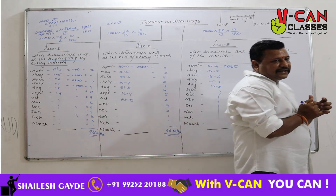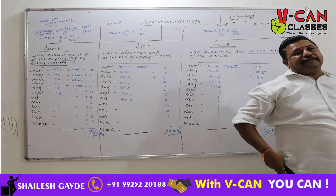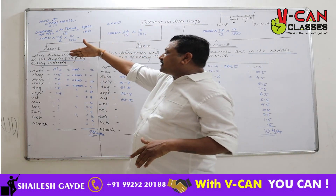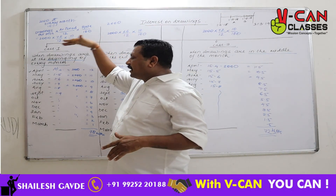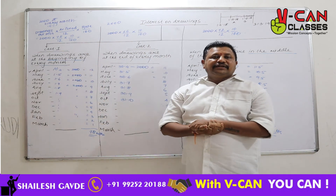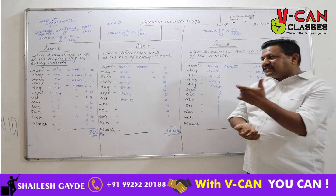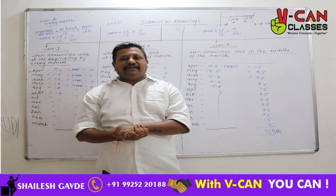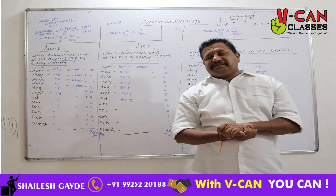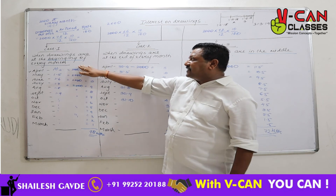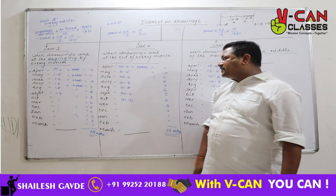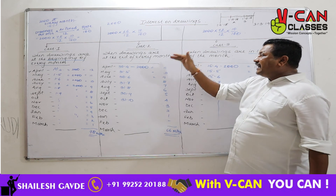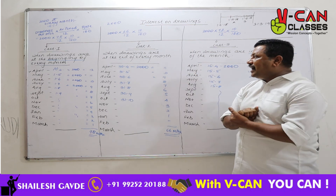So guys, we covered all three cases. When a partner makes fixed drawings at the beginning of every month, interest on drawings is charged for an average period of 78 months. If drawings are at the end of every month, interest is charged for an average period of 66 months. And if drawings are in the middle of every month, interest is charged for an average period of 72 months.